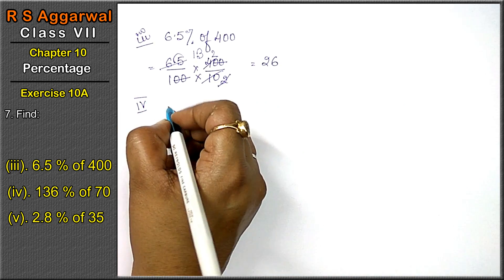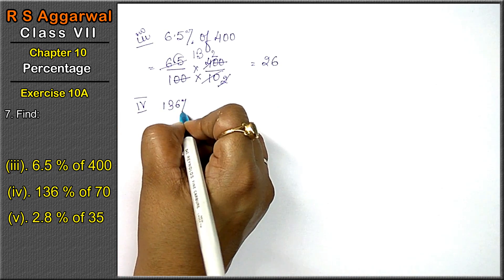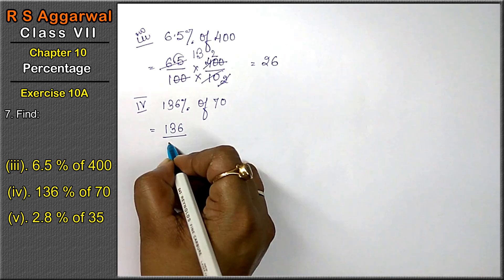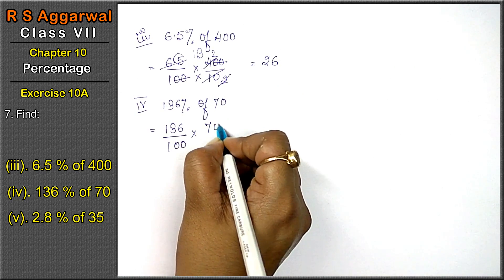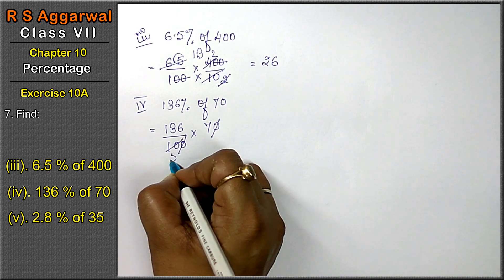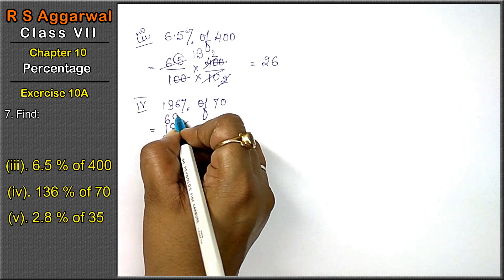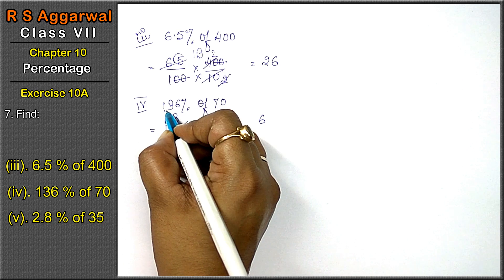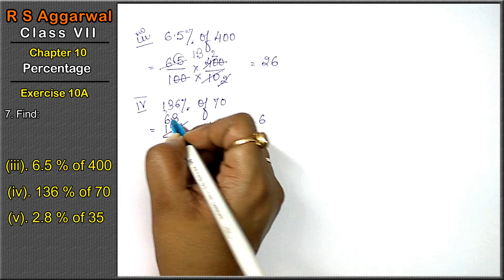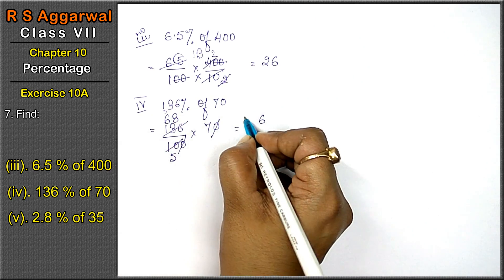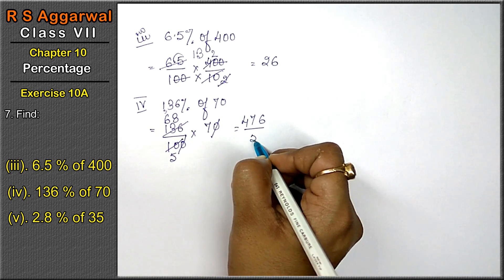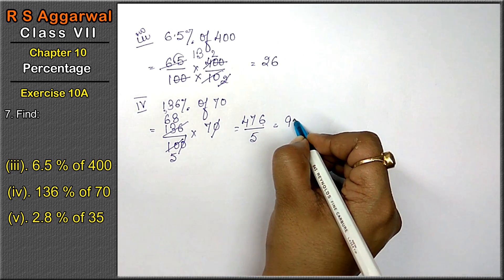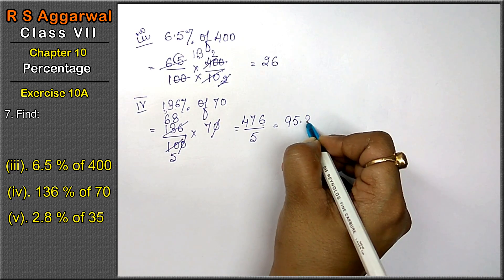Let's do the fourth part. Fourth part is 136 percent of 70. 136 percent is 136 upon 100 into 70. The zeros cancel. 2×5 is 10, 2×6 is 12, 2×8 is 16. Now, 68 into 7: 7×8 is 56, 7×6 is 42, giving 43, 44, 45, 46, 47. So we have 47 upon 5. The answer will be: 9×5 is 45, remainder 2, so the answer is 2, meaning 9.4.